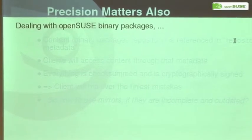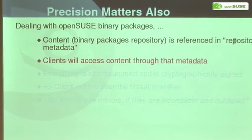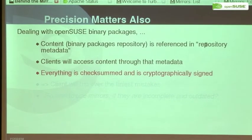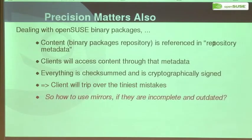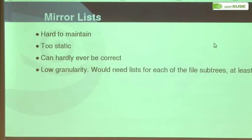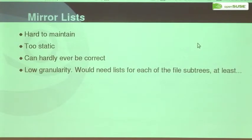Another thing that makes it even more complicated is that the binary packages we offer for download are referenced in metadata, and this metadata contains checksums and cryptographic signatures. So if something is wrong, or packages come from the wrong version from a mirror, then the client will trip over it. One approach would be maintaining mirror lists and trying to keep them up to date, but that's extremely hard to maintain — they are too static and never fully correct.